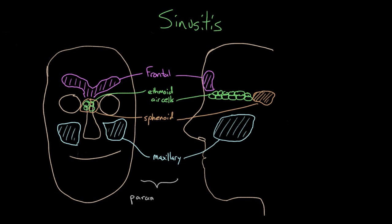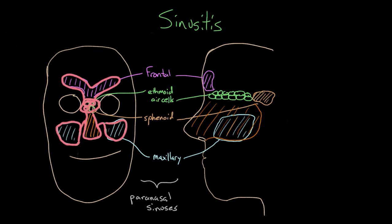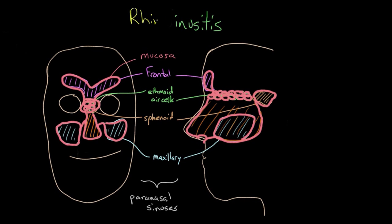Altogether, these are known as the paranasal sinuses. The reason for that is because they're located adjacent to your nasal cavity, which sits right in the middle of your face. Now, your paranasal sinuses and nasal cavity are all lined by a layer of tissue called mucosa, and that mucosa is contiguous throughout — the same mucosa lines everything. Because of this fact, sinusitis is probably more accurately termed rhinosinusitis, and in the medical literature it's referred to in both ways.